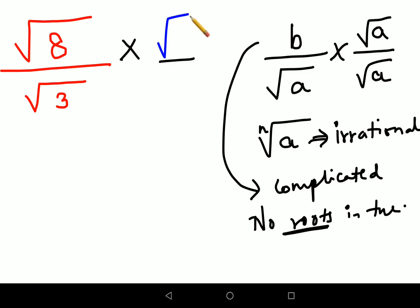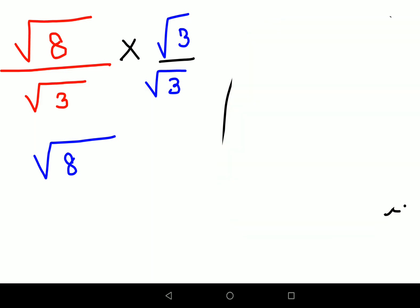Here, obviously using the same logic, since there is a square root, you will multiply the numerator and the denominator by square root of 3. Now when I multiply, see we have √8 and we have √3. Both of them are actually under the same radical sign—the root is of the same power, square.